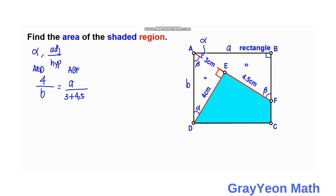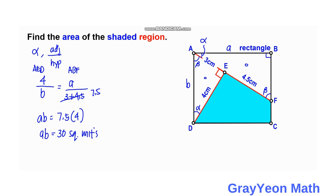So this becomes 7.5, and we cross multiply to get A times B equals 7.5. So AB, being the length times B, equals the area of rectangle ABCD, which equals 30 square units.